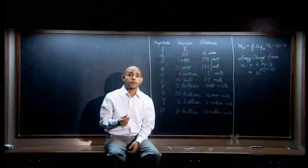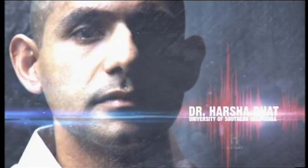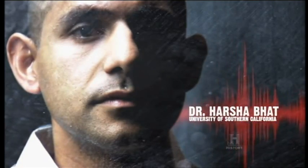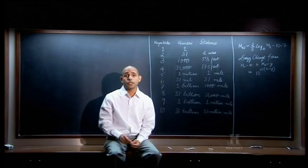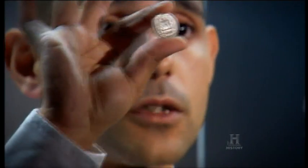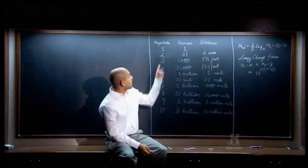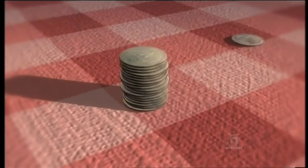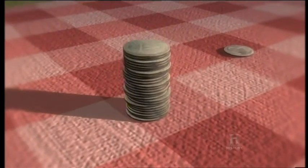Let's try to think about it in terms of a stack of quarters. So let's say a magnitude 1 earthquake represents one quarter. A magnitude 2 corresponds to 31 quarters stacked on top of each other. A magnitude 3, that's about 1,000 quarters.